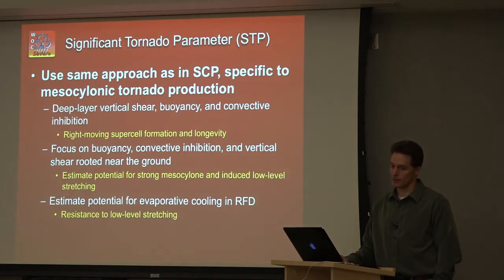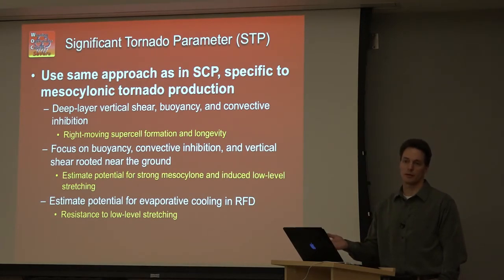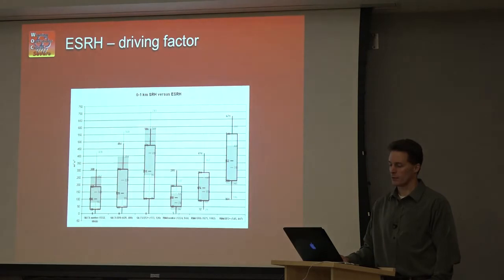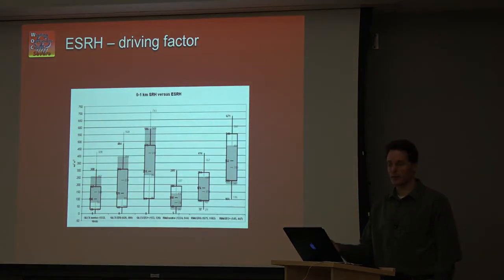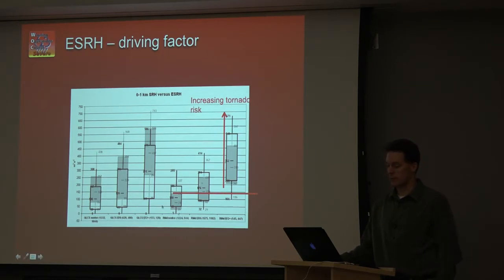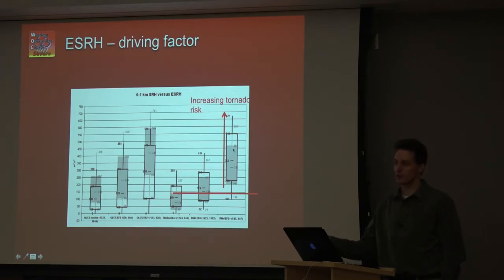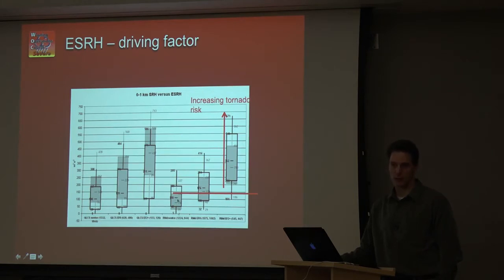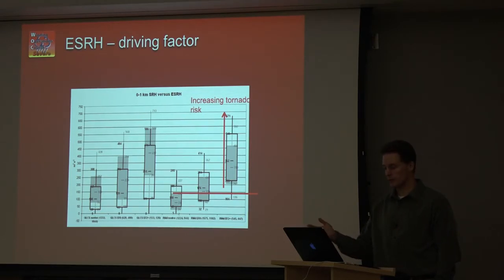We need something in the profile that tells us how strong the pressure perturbation is close to the ground and how strong the resistance to stretching is, so that we can amplify storm-scale vorticity generation up to tornado proportions. We also need an estimate of how buoyant the rear flank downdraft parcels will be — really cold and stable, or relatively warm and unstable? Effective SRH, introduced in the supercell composite portion, clearly increases with significant tornadic storms on the right, whereas non-tornadic storms cluster at the left. As effective SRH goes up, the potential for significant tornadoes goes up.